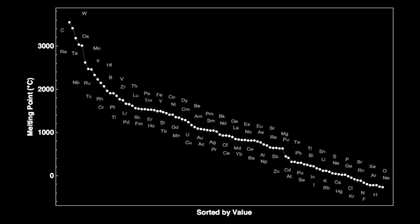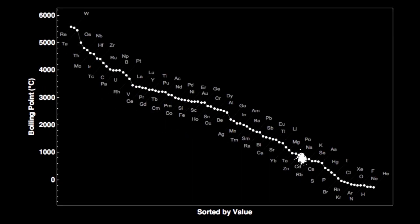Cadmium has the 73rd highest melting point, at 321 degrees Celsius — pretty low! There are only 16 other solid elements that melt at lower temperatures. Cadmium also has the 73rd highest boiling point at 767 degrees Celsius. Its boiling point is only 446 degrees above its melting point. There are only four other metal elements with a smaller gap between melting and boiling points: magnesium, thulium, mercury, and ytterbium.